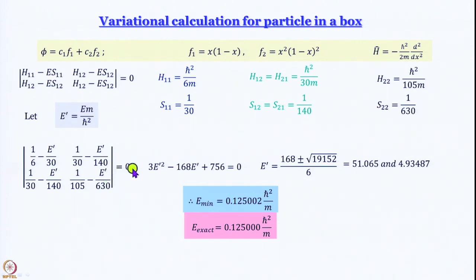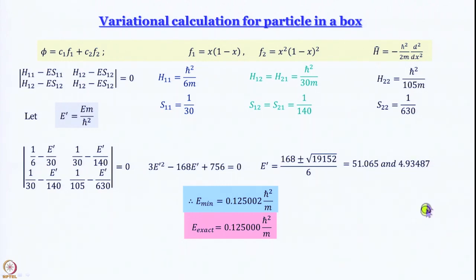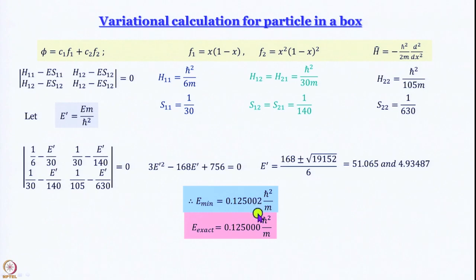This expands as a quadratic equation with two roots: 51.065 and 4.93487. The lower value is the ground state energy. Writing this in terms of ℏ²/m, we compare the minimum value obtained with the exact energy — the agreement is excellent.